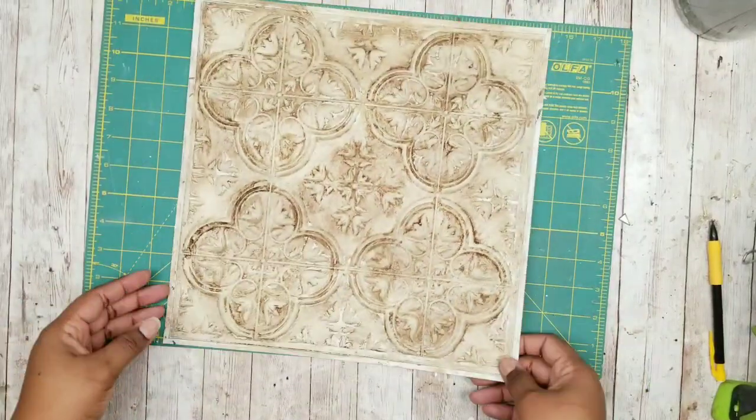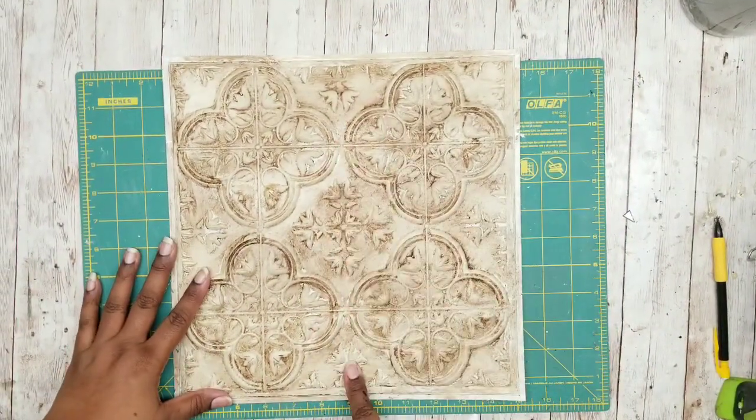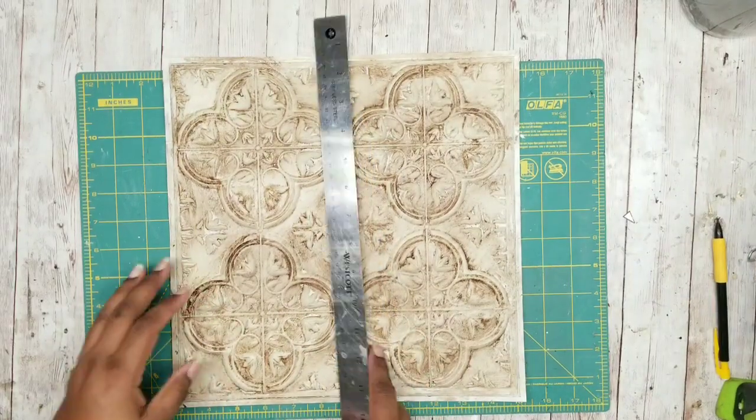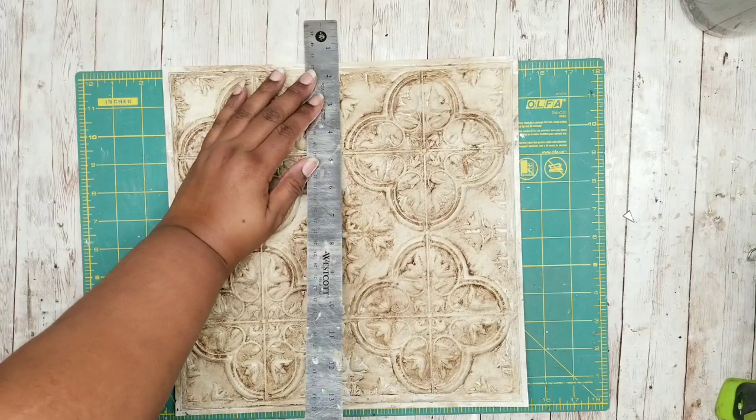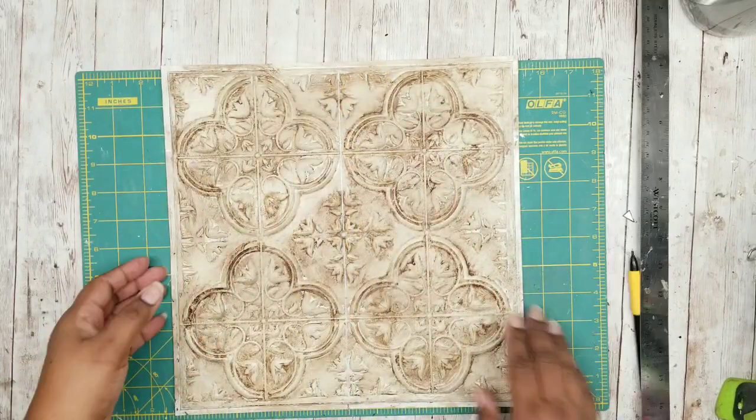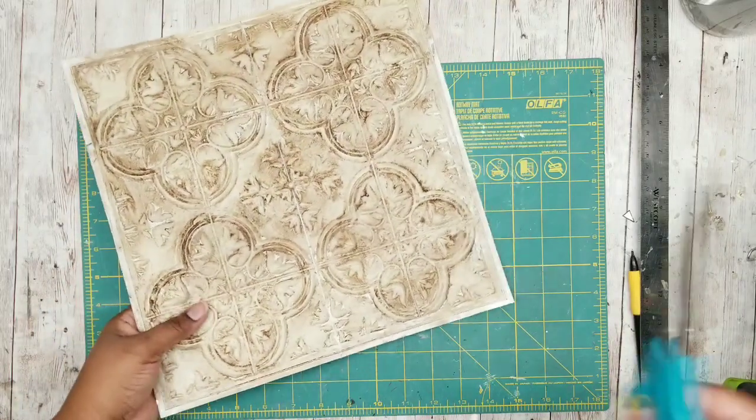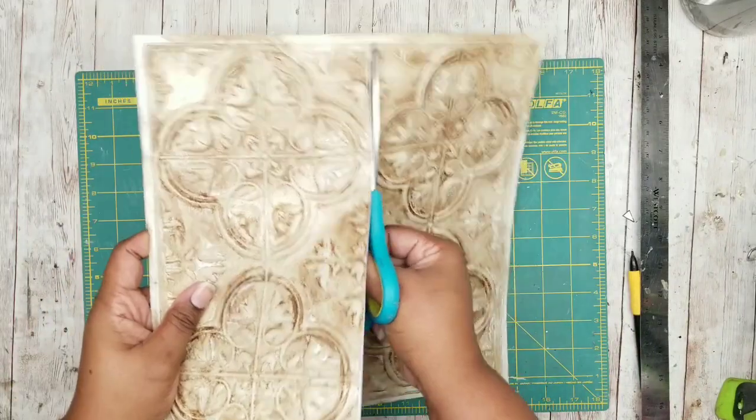Now that all of our tiles had time to dry I'm going to take the first tile and I want to cut it directly down the middle in half. These tiles are about 12 inches wide so I'm just going to make a line straight down the middle at the six inch mark and then I'm just going to go in with a regular pair of scissors and then cut it completely in half.